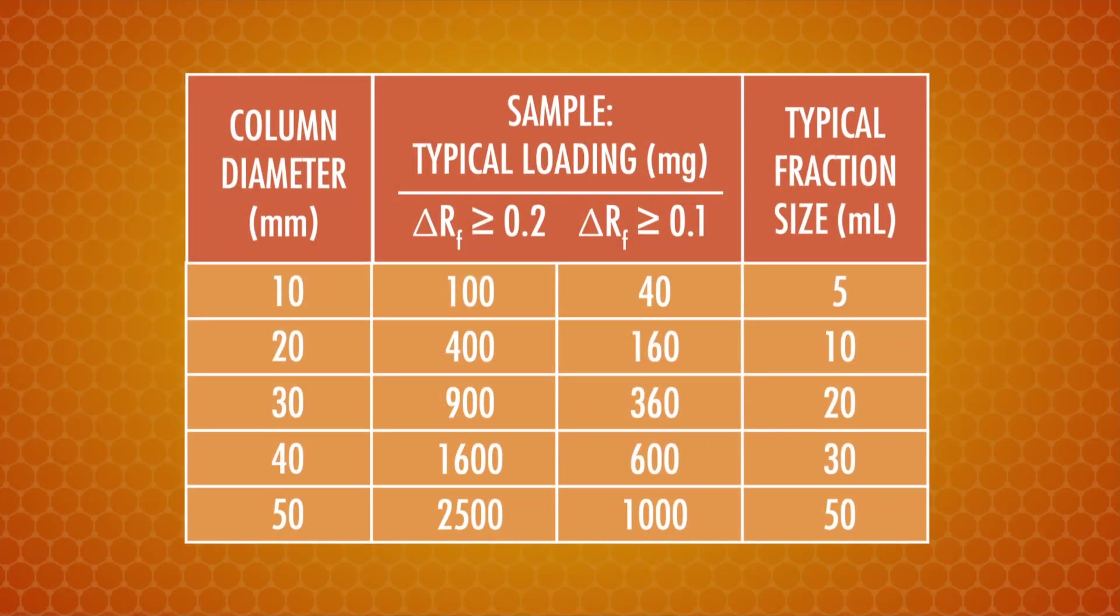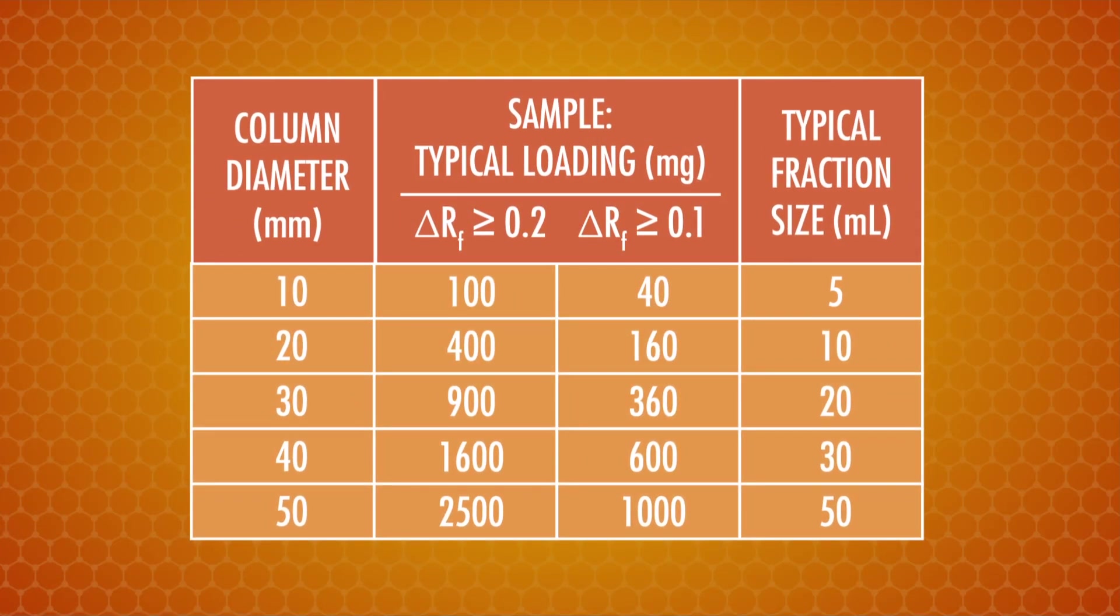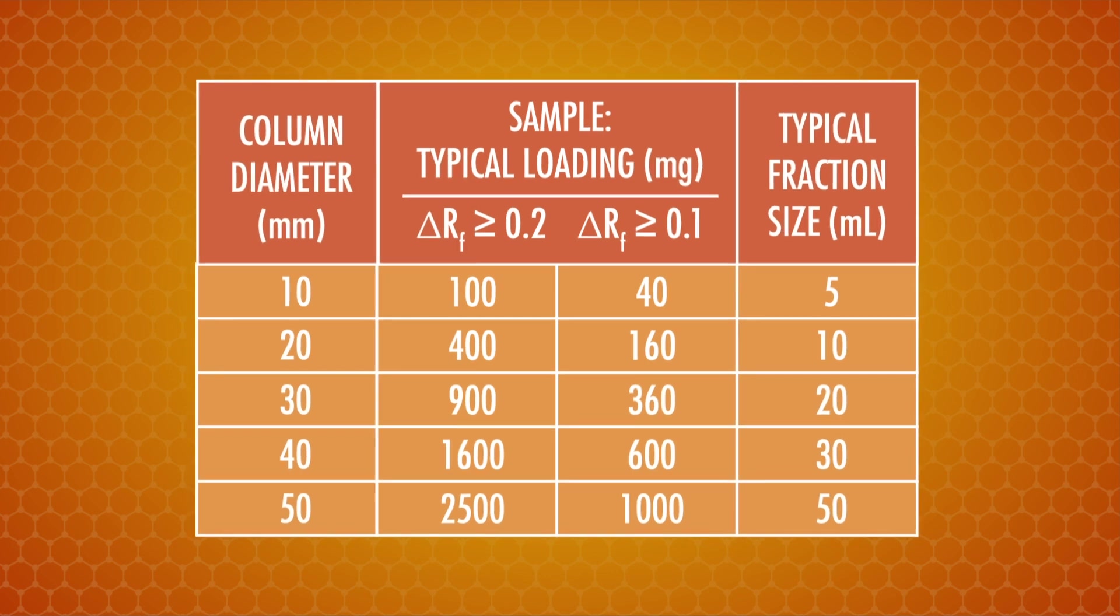TLC gives us a great preview of how our compounds will separate, but a tiny plate isn't practical to purify grams of our reaction mixture. For that, we'll need a bigger, badder technique called flash chromatography. To set up our flash chromatography, we actually need to play around with TLC to find a solvent system that gives the component we want to separate from the reaction mixture an RF of about 0.2. We also need to know the mass of the unpurified sample we want to separate, and from there we can pick an appropriately sized flash column with a simple table, thanks to the work of chemists before us.